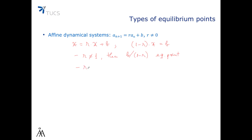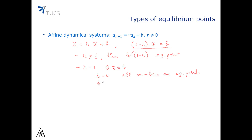Now, if r equals 1, then this equation becomes 0 times x equals b. So we have two cases. If b equals 0, then all numbers are equilibrium points. If, on the other hand, b is different than 0, then the dynamical system has no equilibrium points.